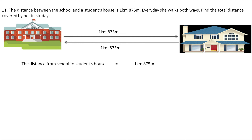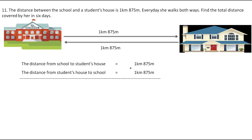The distance from school to student's house is 1 km 875 m, and the distance from student's house to school is also 1 km 875 m. Adding these gives the total distance covered by the student in one day as 3 km 750 m.